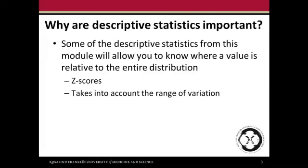Earlier descriptive statistics from a previous module looked at things like central tendency, including the mean, median, and mode, and measures of variability, including range, standard deviation, and variance. These new scores that we're going to be looking at will be able to tell us where a certain value is, taking into account the range of variation that exists.